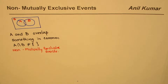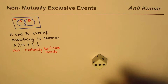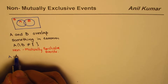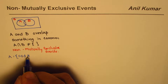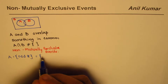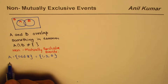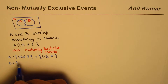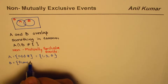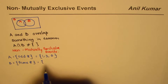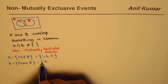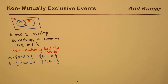So that is how we define events which are not mutually exclusive. Let's take an example of rolling a die. Let event A be odd numbers - for a die that would be 1, 3, and 5. Let event B be prime numbers. The prime numbers a die can show are 2, 3, and 5.